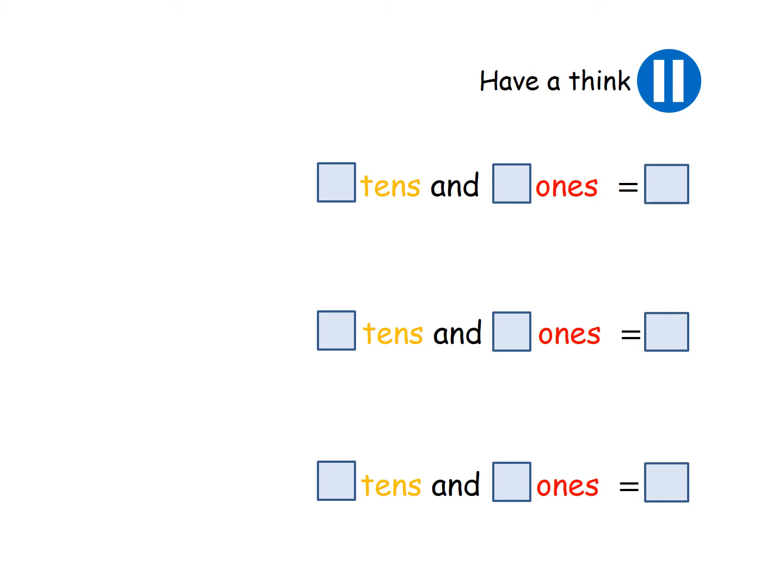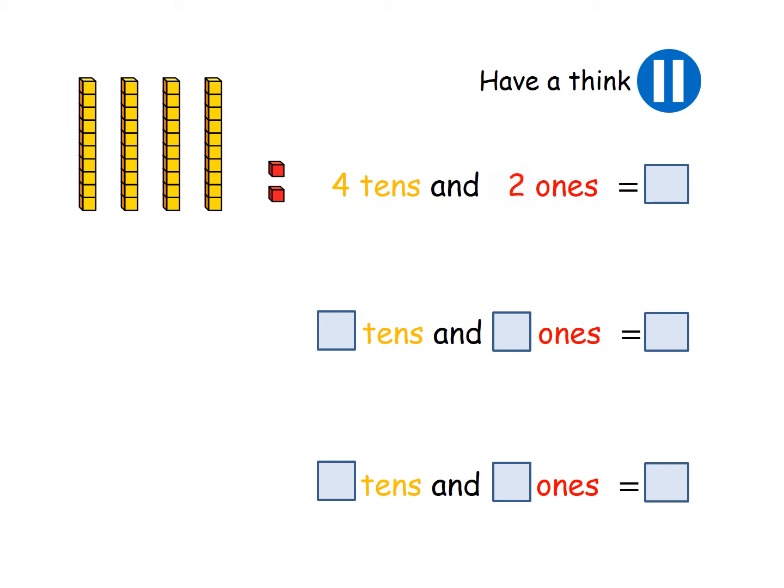Okay, this time you're going to count the tens and ones for me. So have a look at this one. How many tens? How many ones? What number does it make? Fill in the gaps. Four tens and two ones. What number does that make? Put the digits together. 42.